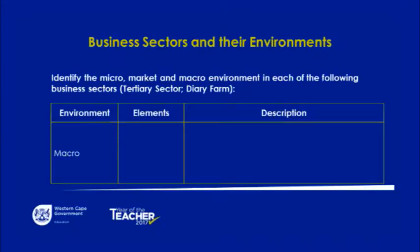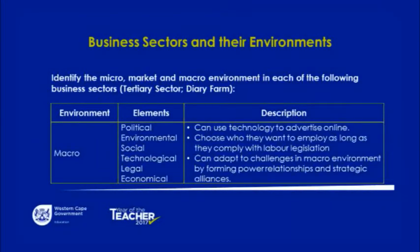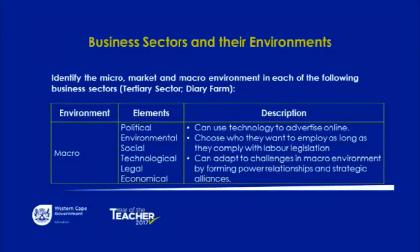Moving on to the macro environment of the tertiary sector — the elements remain the same: political, environmental, social, technological, legal, and economical. A description is that they can use technology to advertise online. They may choose who they want to employ as long as they comply with legislation, which applies across all sectors. They can adapt to challenges in the macro environment by forming power relationships and strategic alliances, but they cannot change or control what is happening in the macro environment.